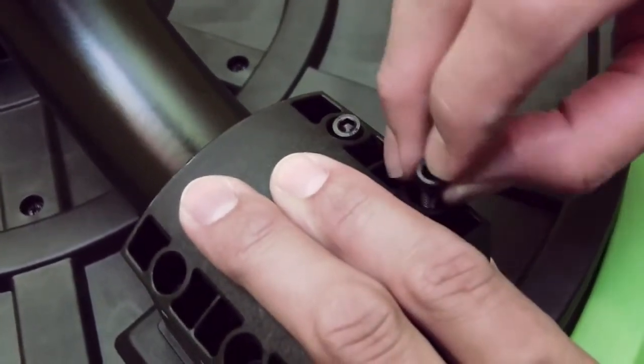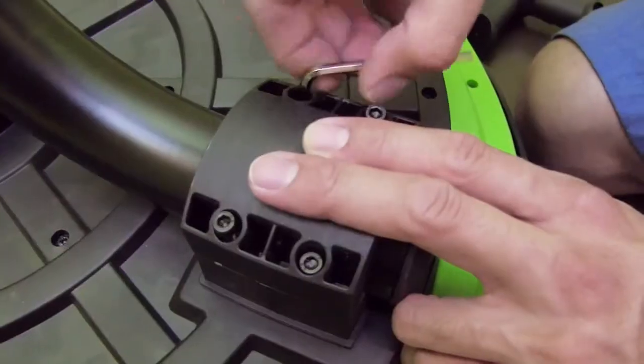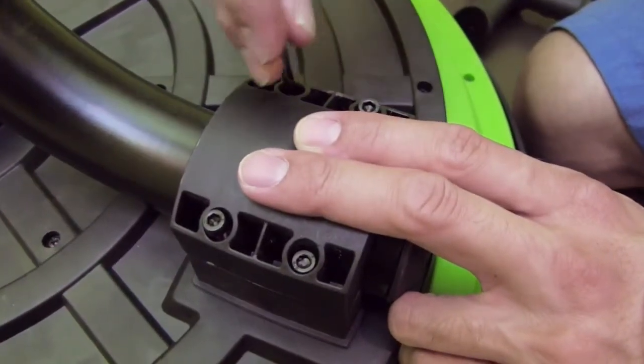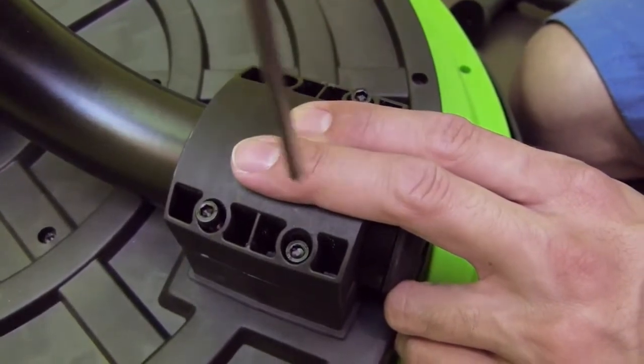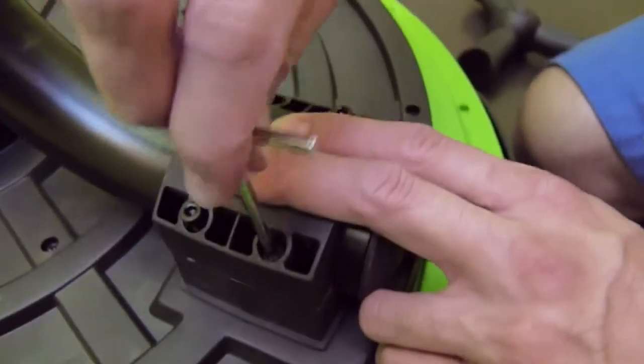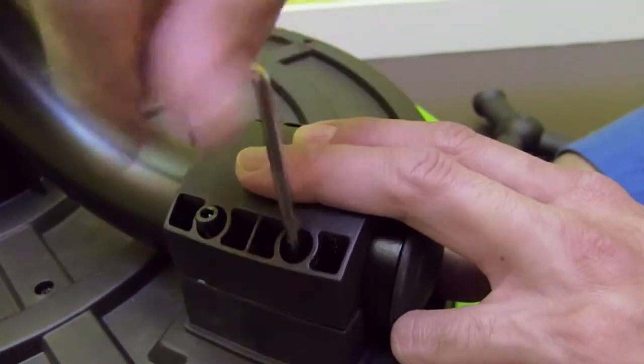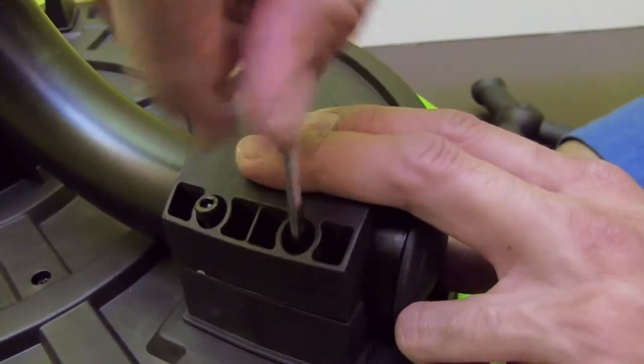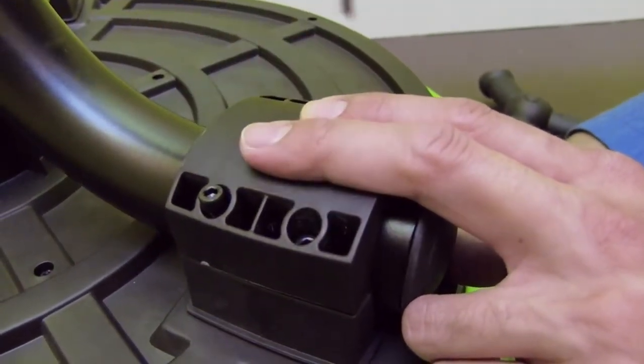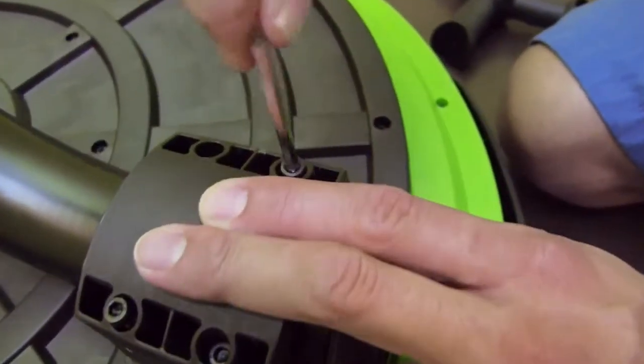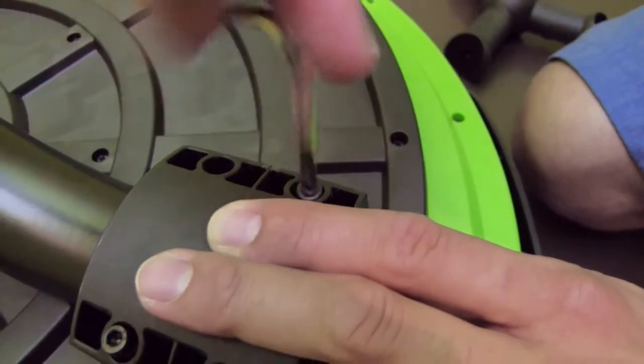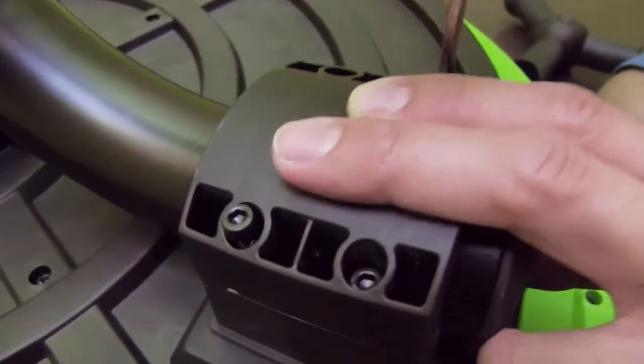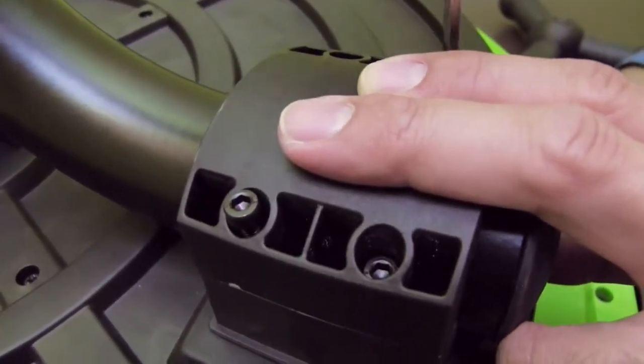Hand tighten all four allen wrench screws by hand and then use the included small allen wrench to tighten the leg couplings. Be sure to tighten them in a star pattern. Once slightly tightened, turn an extra quarter turn or more if needed to complete the cycle.